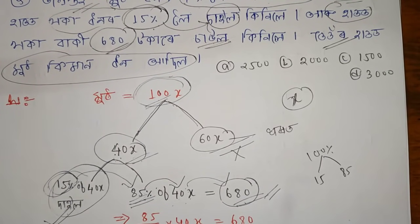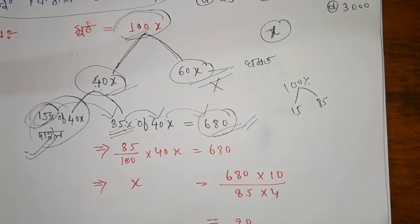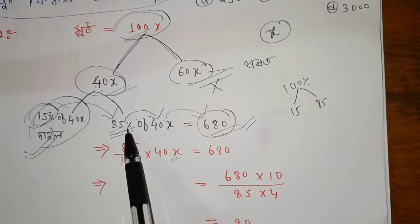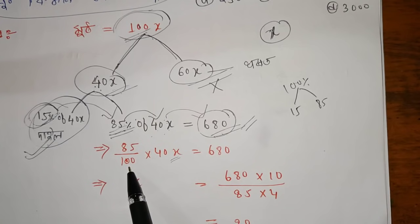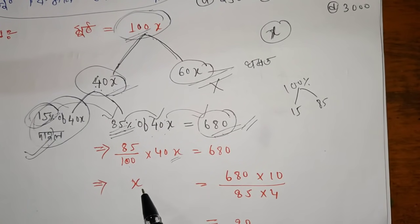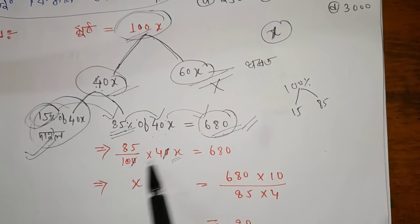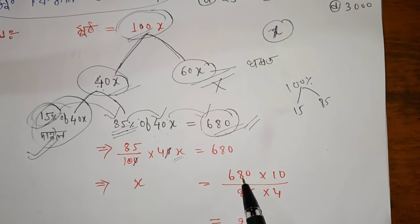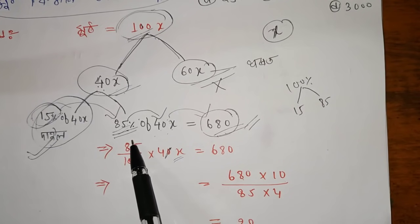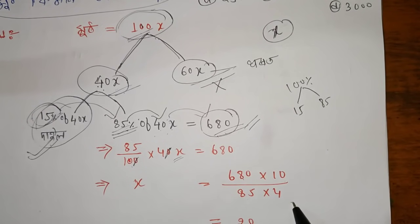If you don't have any confusion — this is the work that we have to do. This is the percent symbol, and this is 100. This is clear. If you have x, you can cross multiply. This is 0 and 0 cancels directly. So 680 into 100 will cross multiply: 680 into 100 divided by 85 into 4. 85 into 4 is the denominator.